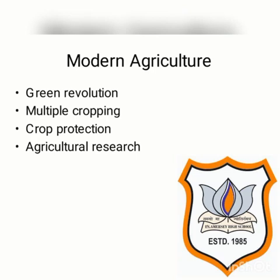Due to the use of these modern inputs, agricultural production increased intensively, and therefore it was called the Green Revolution. So we may say that fast technological growth attained by agriculture with the help of irrigation, fertilizers, seeds, pesticides and machines is known as the Green Revolution.